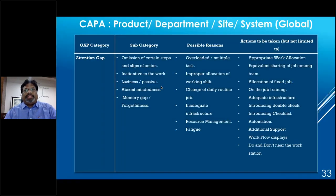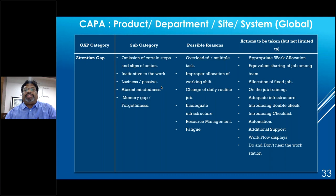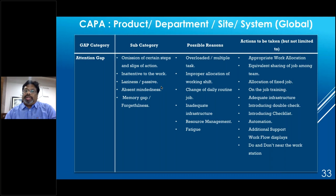For attention gap CAPAs (covering omission, inattentiveness, laziness, absentmindedness, memory gaps): possible reasons include work overloading, improper work allocation, change in daily routine, inadequate infrastructure, resource management issues, or fatigue. CAPAs include appropriate work allocation, equitable sharing of jobs, allocation of fixed jobs, on-the-job training, providing adequate infrastructure, introducing double checks, implementing checklists, automation, additional support, workflow displays, and posting do's and don'ts at workstations.